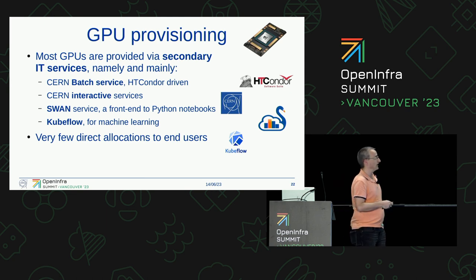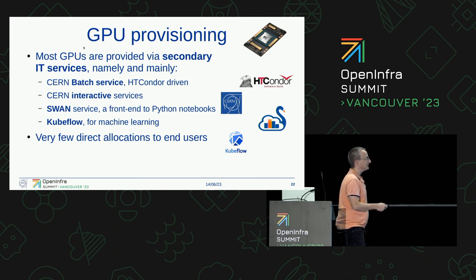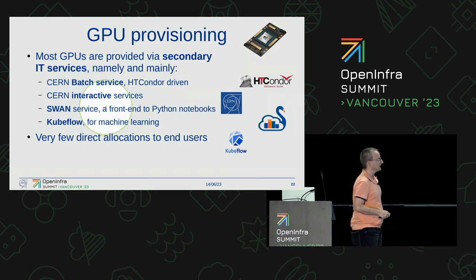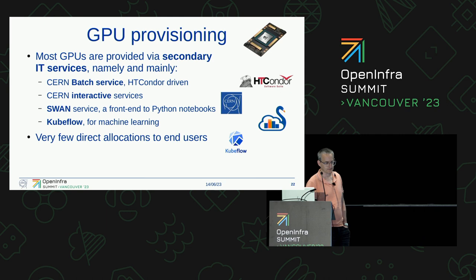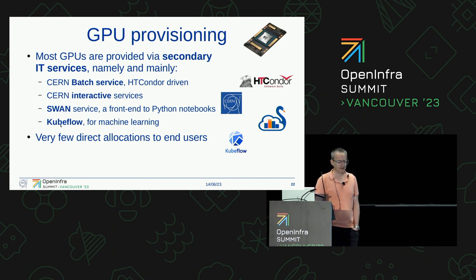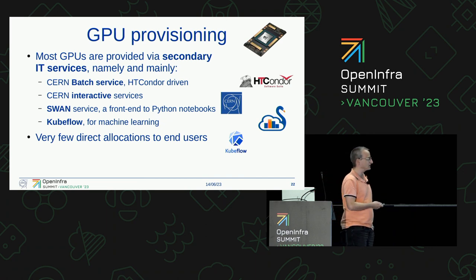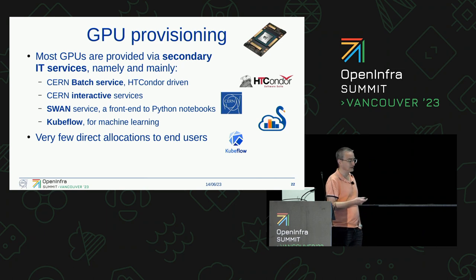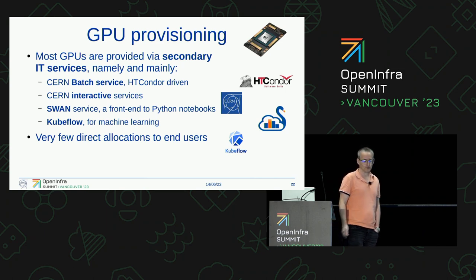On GPU provisioning, our most important customers are actually ourselves — secondary IT services, namely the batch service, which is HTCondor driven. We have some GPUs in interactive services, and we have a service called SWAN, which is the front end to Python notebooks, and they also have quite a lot of T4s. And there's a specific framework for machine learning which is based on Kubeflow. There are very few direct allocations to users and we try to avoid them, because from these services we can actually ask for monitoring information in PCI pass-through mode, which we don't have from direct users, and try to optimize things this way.